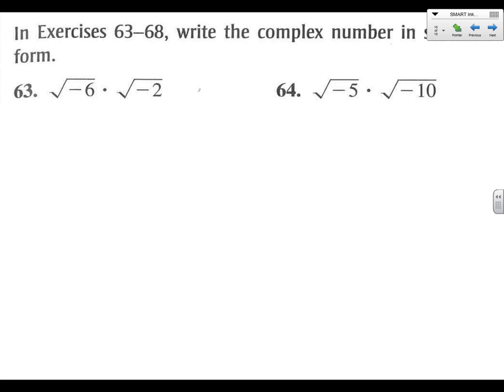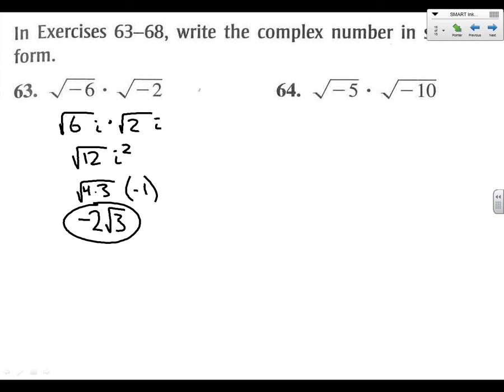Go ahead and try one for yourself. Let's try 63. All right, answer here. We're going to pull out the i first. So we'll get root 6i times root 2i. Root 6 times root 2 is root 12. And we'll get i squared. So one last thing we need to do is recognize that 12 can be broken down. So we'll get 2 root 3 times it by a negative. We'll put the negative out front.